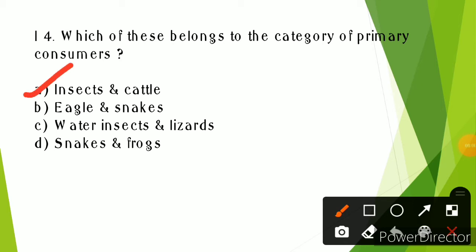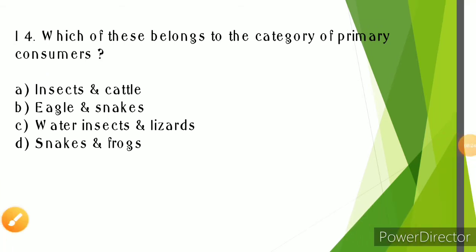Insects and cattle are the primary consumers category. Eagles are the tertiary consumers, snakes are the third or fourth trophic level, water insects and lizards are primary consumers, and snakes and frogs are also primary consumers. So the answer is insects and cattle.